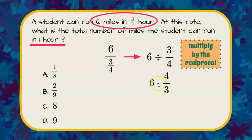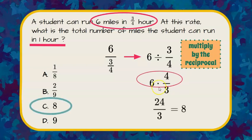So keep the six, change to multiply, and flip. The reciprocal of three-fourths is four-thirds. Multiply the numerators, we get 24 over three, and that is eight. Our answer is C, eight miles in one hour.